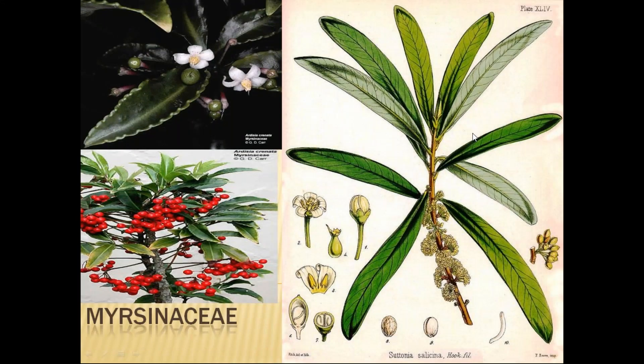Good afternoon class. As a continuation of botany family classes, today we are going to be seeing three families: Myrsinaceae, Sapotaceae, and Symplocaceae. These are three plant families in which some medicinal plants of Ayurveda are found. We will go through them one by one.